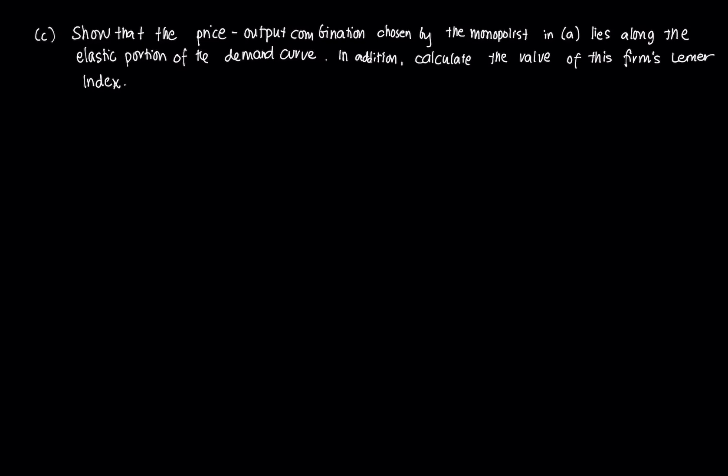Let's start first with the elastic portion of the demand curve. To show that our quantity QM equals 5 and PM equals 300 lie along the price elastic portion.